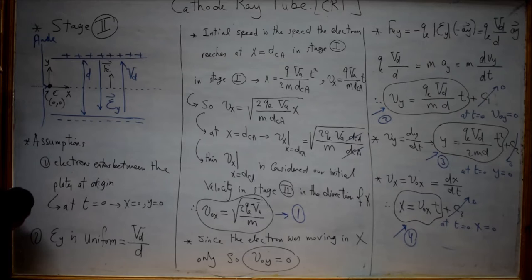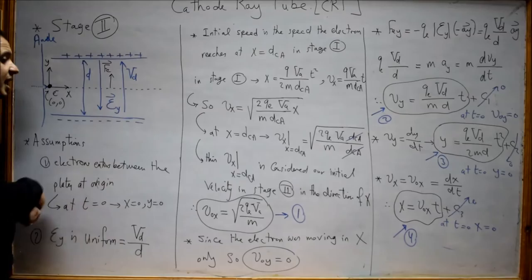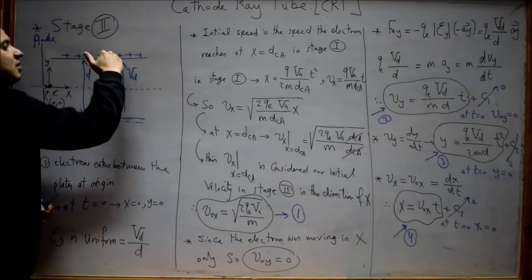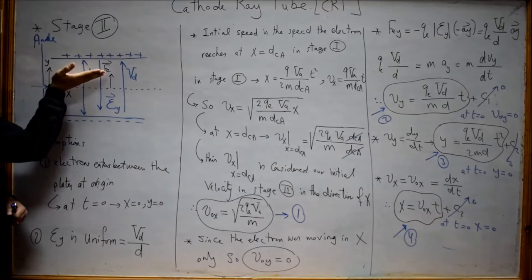In this case, the electron, which was moving initially in the X direction, will be affected by the force exerted by the electric field in the Y direction. So it will be deflected towards the positive plate — attracted by the positive plate. Instead of moving just horizontally in the X direction, it will deflect towards the positive plate.